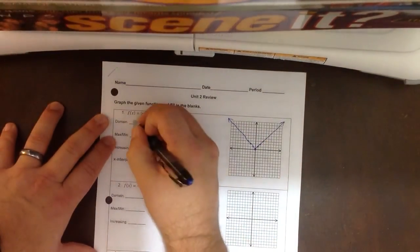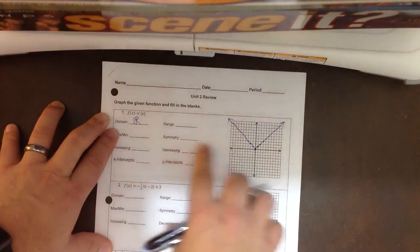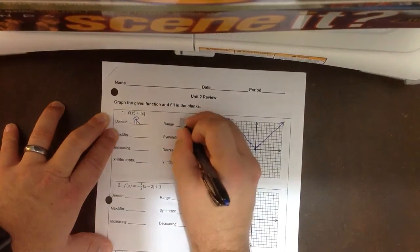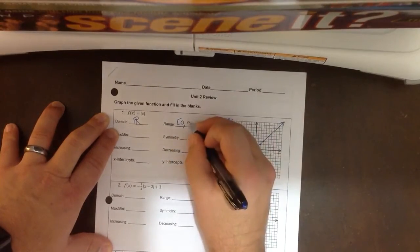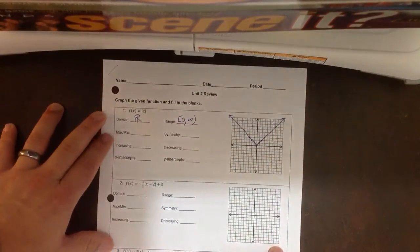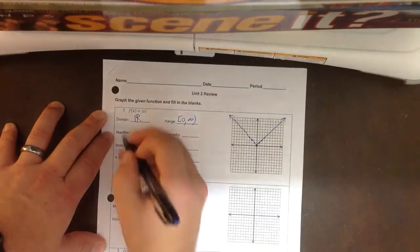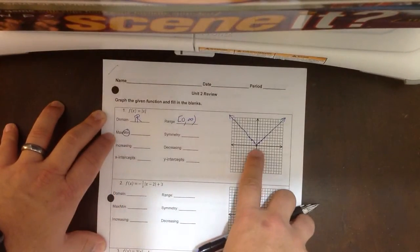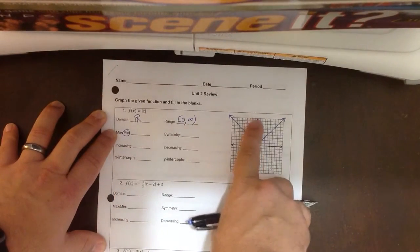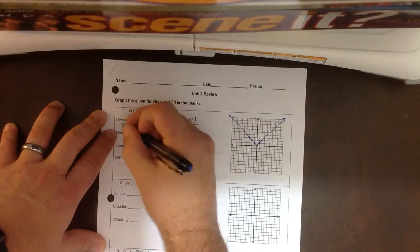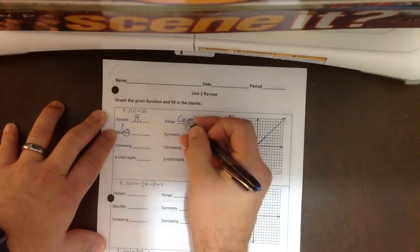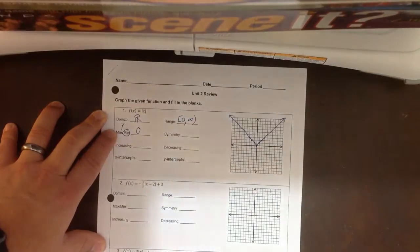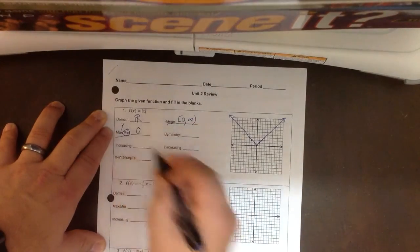My domain is all real numbers for every absolute value. My range on this one, it starts at 0, touching 0, and going all the way up to infinity. This one is the lowest point, it's my minimum. Since we're talking about lowest to highest point, that's going to be my y value, that's height. And so my y value is going to be the 0 right there. These two things should go together.